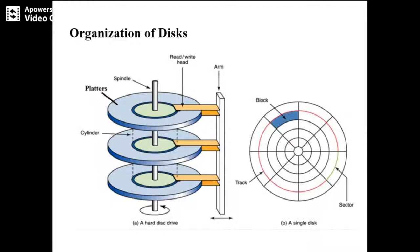Let us go through the organization of disk, which is one of the important questions in our file structure concept. The disk, or the platter of the disk, is located on a spindle. The spindle acts as a stand that carries the platter. The spindle rotates, and along with the spindle, the platter is also getting rotated.